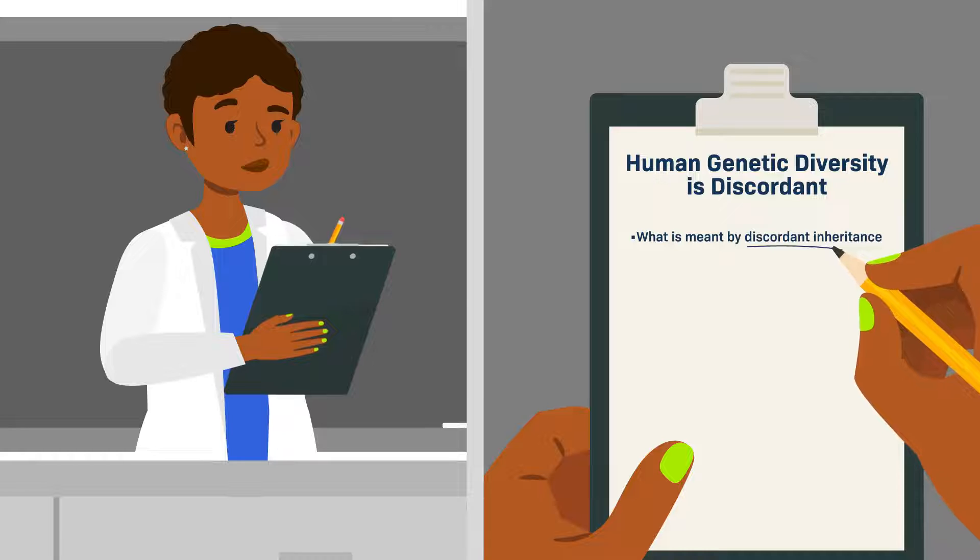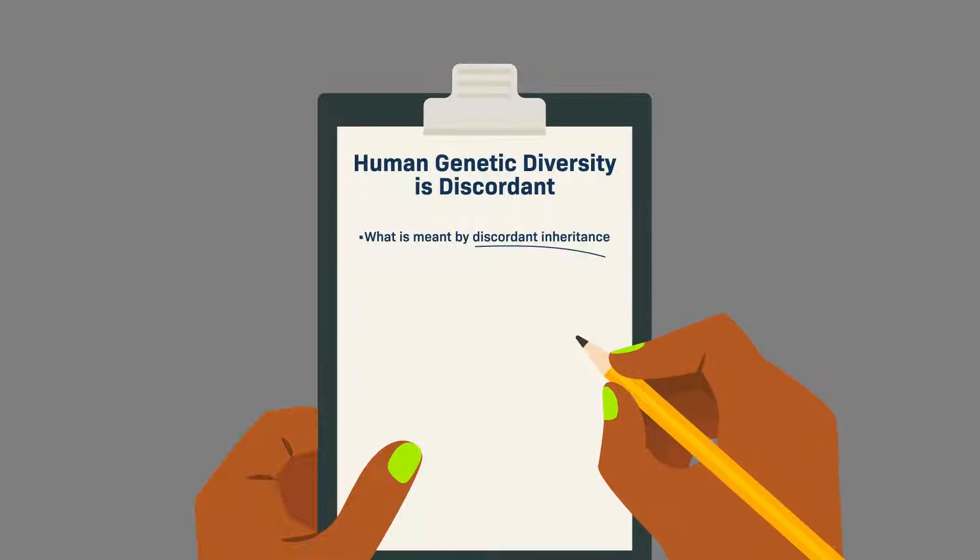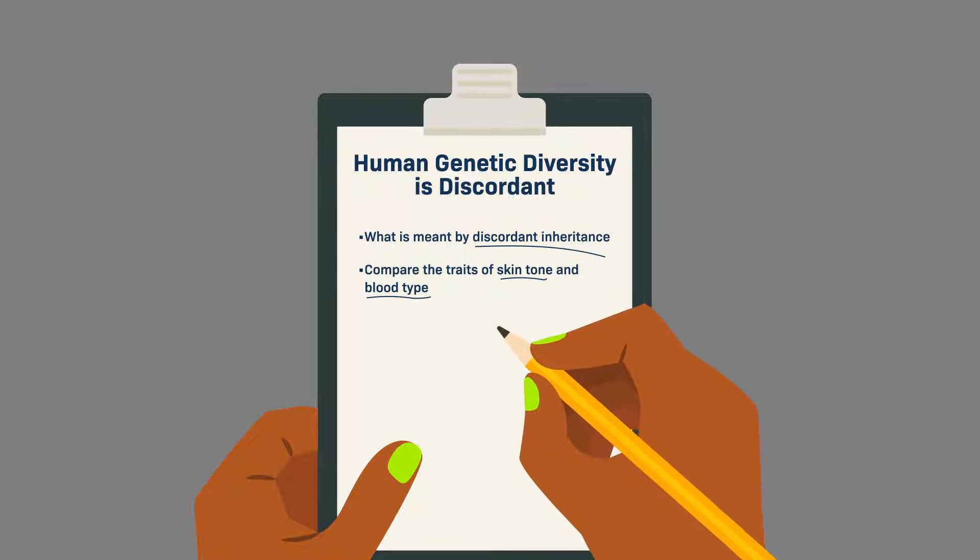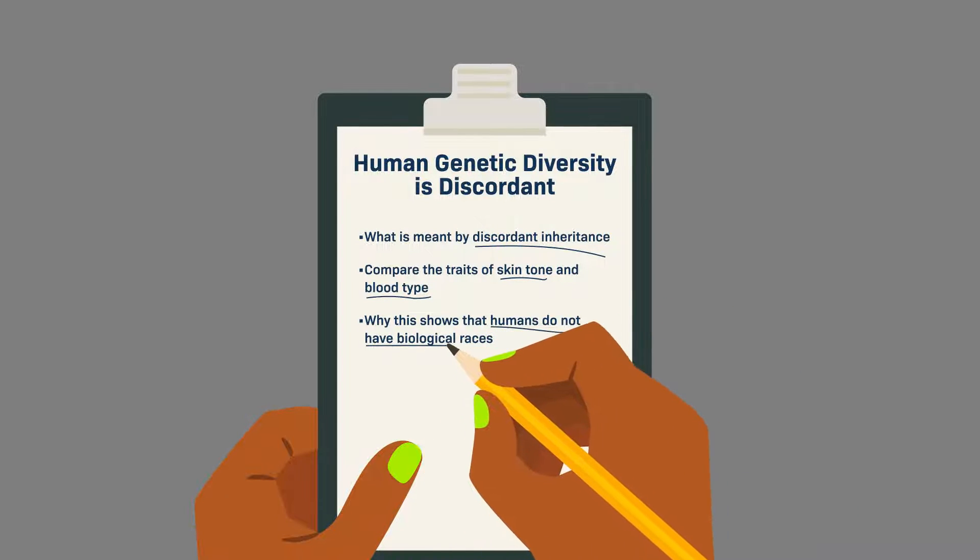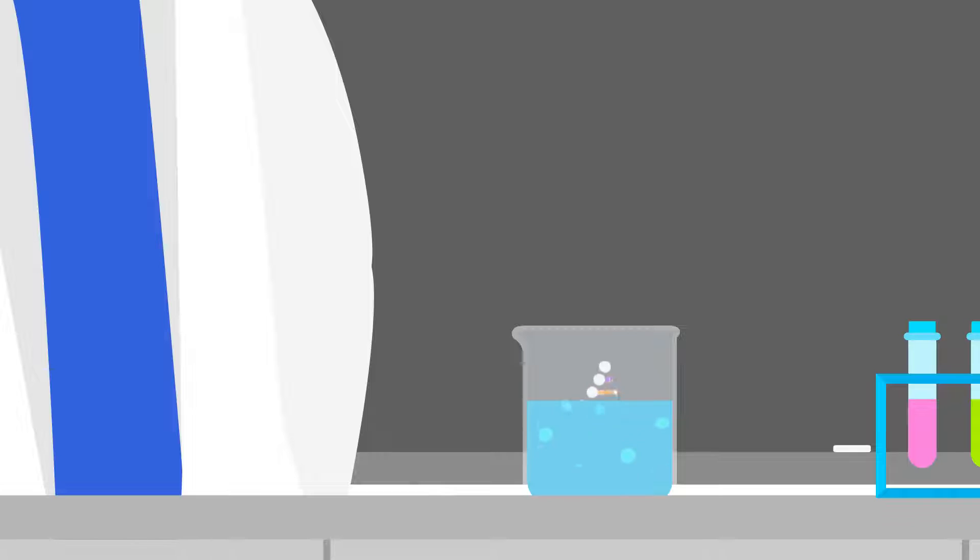In this video we'll explain what is meant by discordant inheritance. We'll also use our understanding of discordant inheritance to compare the traits of skin tone and blood type, and explain why this shows that humans do not have biological races.